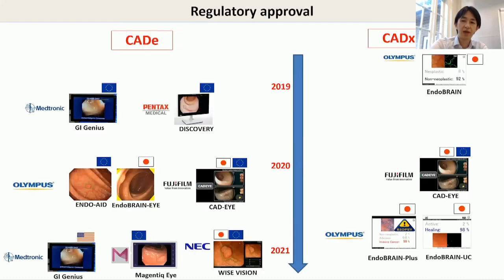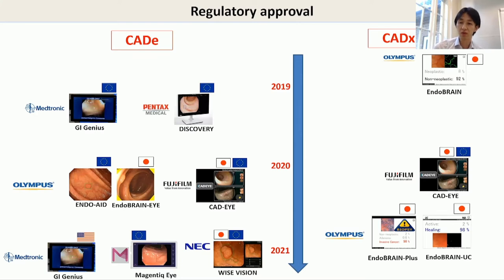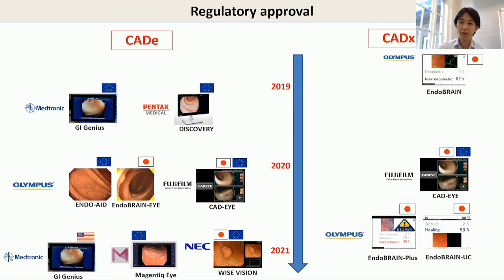The more important thing is whether it is available or not. More than 10 AI devices designed for colonoscopy have already secured regulatory approval, especially in the field of CADe. Everything is packed — Olympus, FujiFilm, NEC, Medtronic, and Pentax have already provided their own AI devices, and you can find some devices provided by third parties as well.